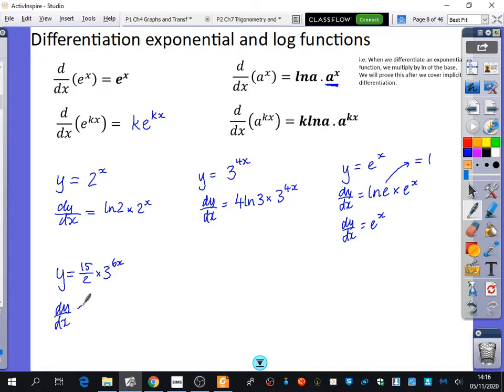When I differentiate it, the 15 over 2 would stay from before. I would also have a 6 ln 3 or ln 3 times 6 is the same thing. And then I would have the 3 to the power of 6x. So 15 over 2 times 6 is 45. So I have 45 ln 3 multiplied by 3 to the power of 6x.